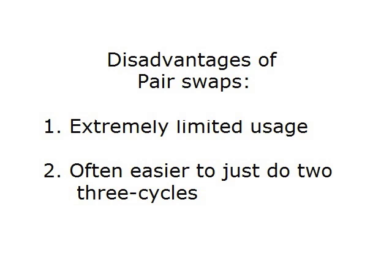Pair swaps accomplish a lot by solving four pieces, but still have several disadvantages. First, they have extremely limited use — only a few cases where this type of commutator can be used without being overly complicated. Second, most of the time it is often easier to just perform two three cycles: the first three cycle solves one of the four pieces, and then the second three cycle solves the three remaining pieces. Because of these reasons, I will not spend any more time discussing pair swaps and will now focus entirely on three cycles.